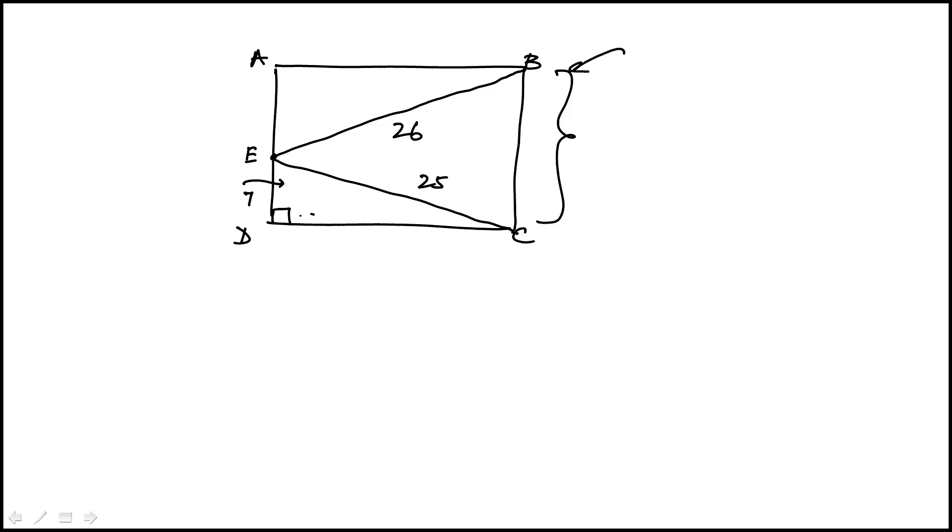So I'll start with this right triangle. This is a familiar triangle. It's a 7, 24, 25. That's the hypotenuse here. That means this is 24.